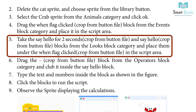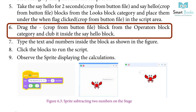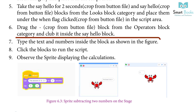5. Take the 'Say hello for 2 seconds' and 'Say hello' blocks from the Looks block category and place them under the 'When flag clicked' block in the script area. 6. Drag the operator block from the Operator block category and club it inside the 'Say hello' block.